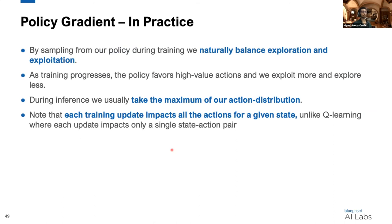During training, you might have noticed that we actually don't have this need for this epsilon greedy algorithm. By sampling from our policy, since it's a distribution over actions, we naturally balance exploration and exploitation. At the beginning, since it's randomly initialized, our actual distribution has lots of exploration. We don't know what the best action to pick is. However, as training progresses, the policy starts favoring high value actions and we start exploiting more and exploring less.